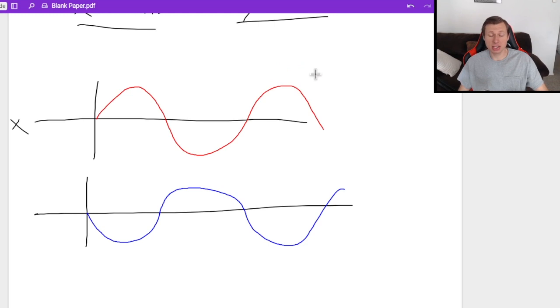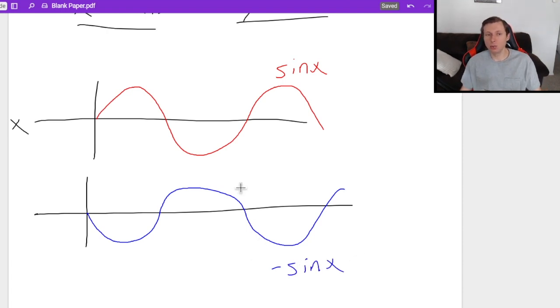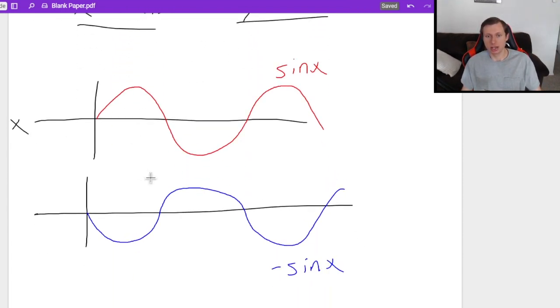And the way you would write this as a function is you would say this is sine x and you would say this is negative sine x. In other words, whenever you want an x-axis reflection, the negative sign goes in front of the sine.